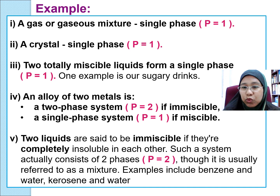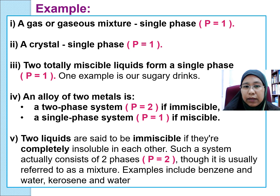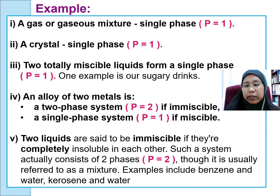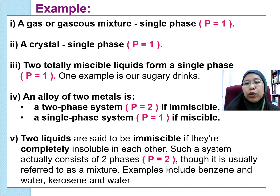Malaysian pewter is just one phase because it is miscible. Two immiscible liquids are said to be two phases, although they are referred to as a mixture. For example, water and oil are immiscible, but because both are liquid, we still consider it as two-phase.